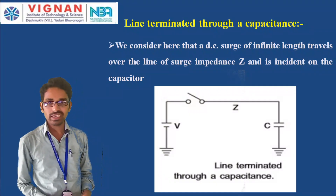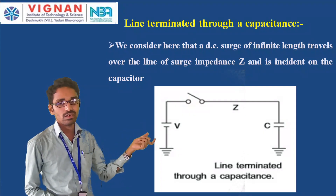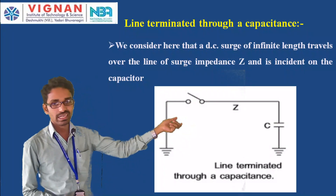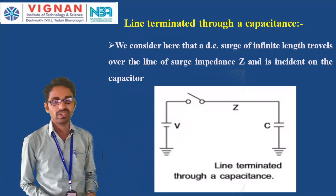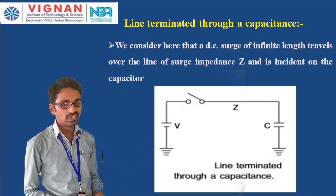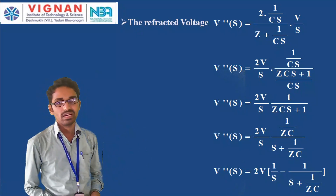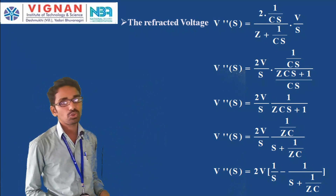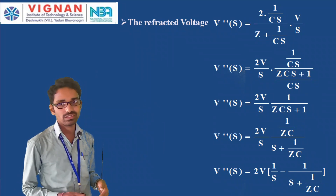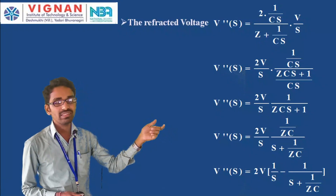For a line terminated through a capacitance: consider a DC voltage V with a switch S, transmission line with surge impedance Z, and a capacitance C connected at the terminal end of the line. A DC surge traveling over the long transmission line with surge impedance Z is incident on the capacitor. Using the Laplace transform, V''(s) = 2 × (1/Cs) / (Z + 1/Cs) × (V/s), applying voltage division across the capacitor.